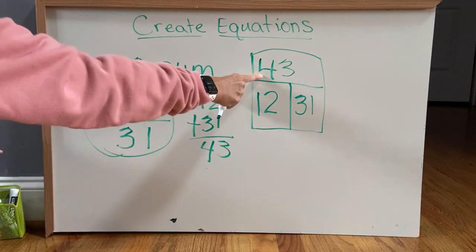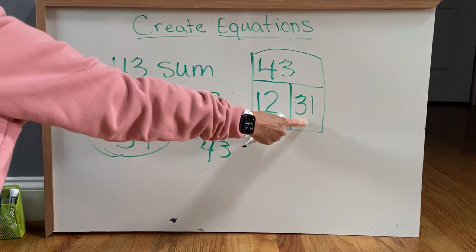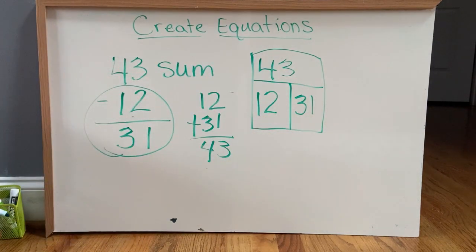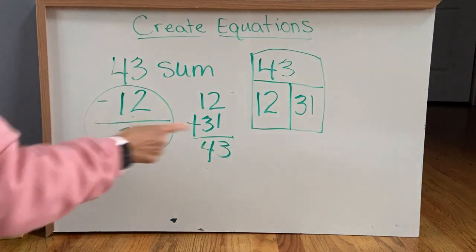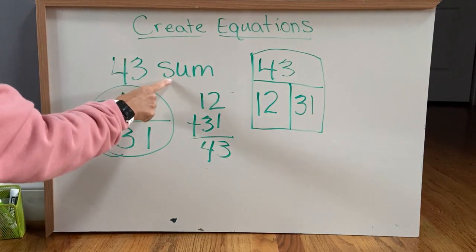You just subtract another number, so you would change this one out with a different number, and whatever your answer is would be the other member of the fact family. So that is how you can take any given number and make it the sum.